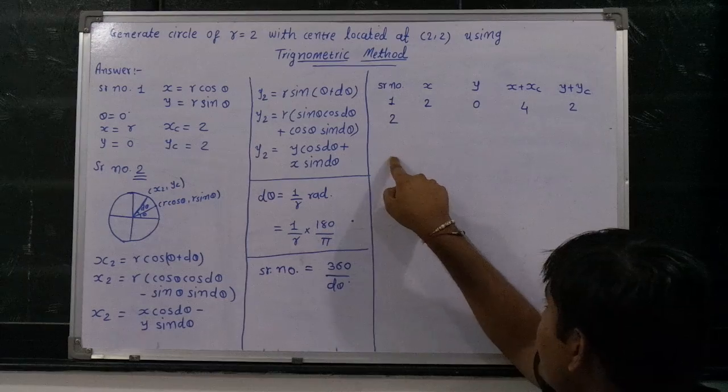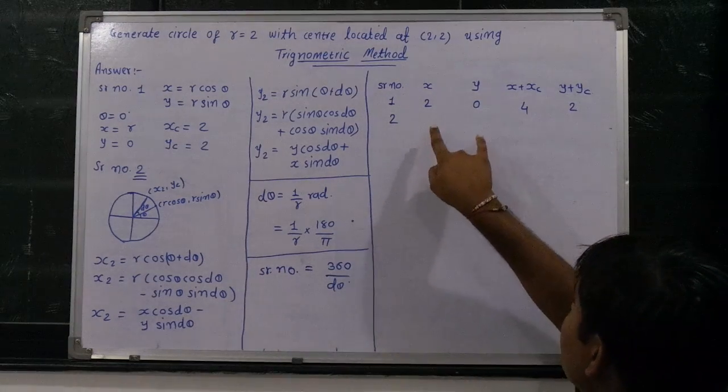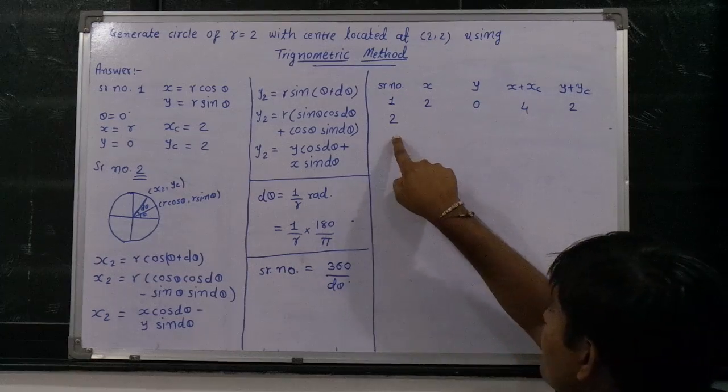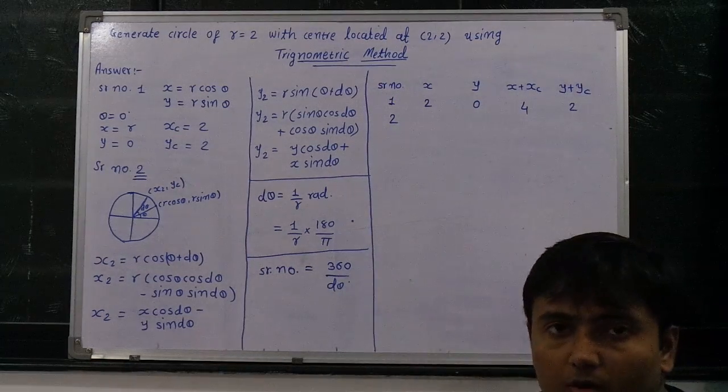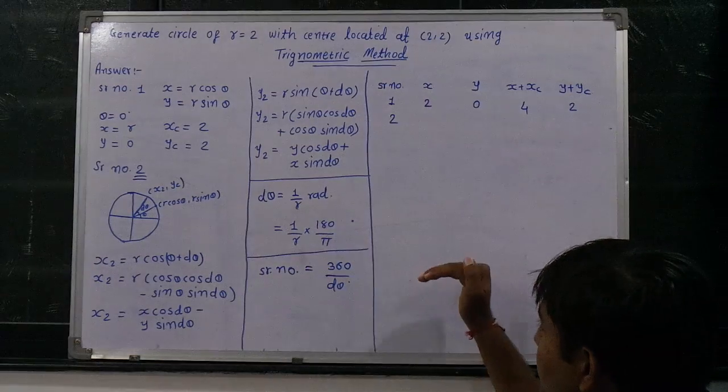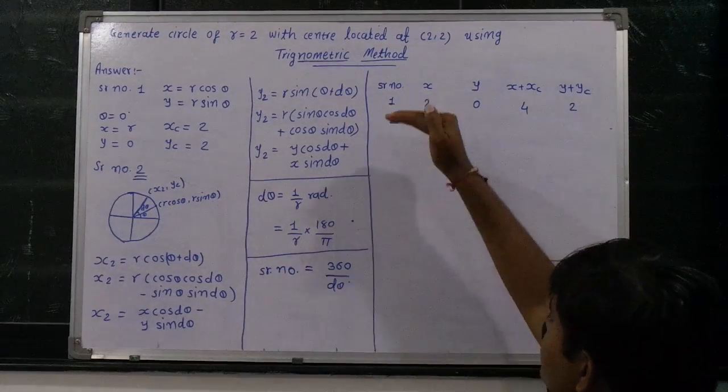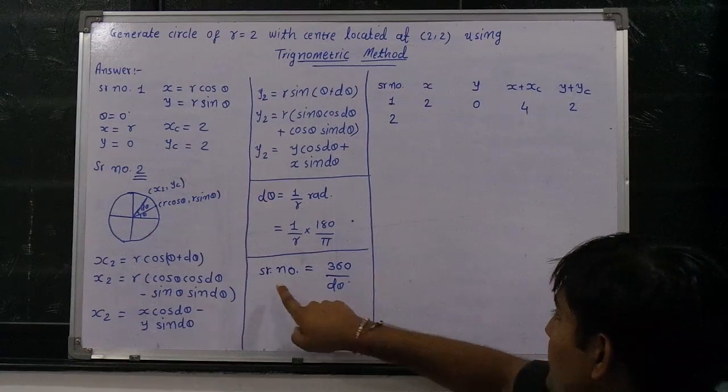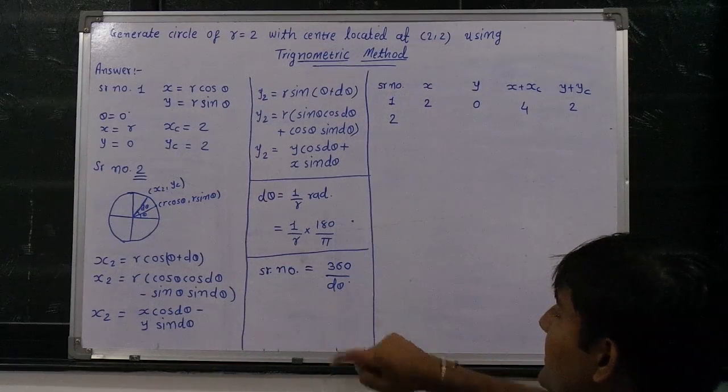And from the third point onwards, the same x and y values will be taken from the second iteration, and the third point will be calculated and obtained in the same manner. How many iterations do we need to do? For that purpose, serial number is equal to 360 divided by d theta.